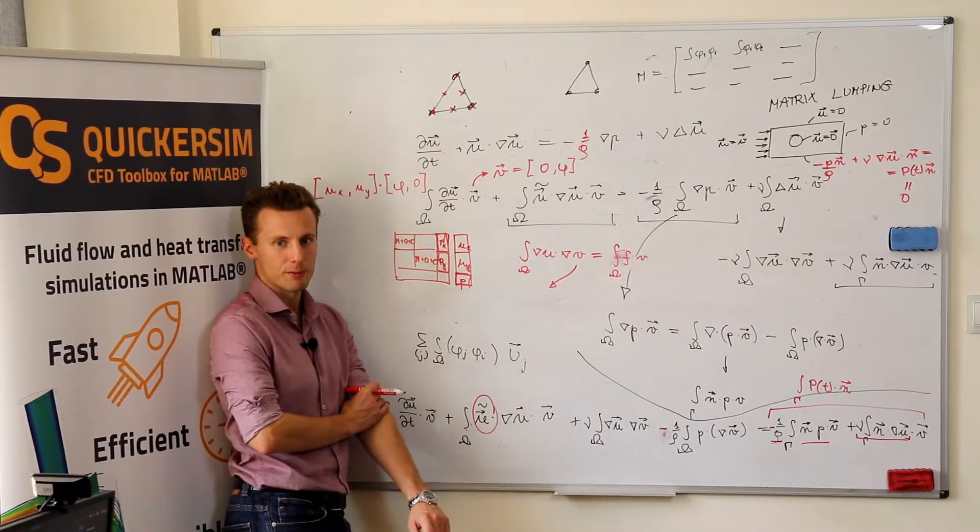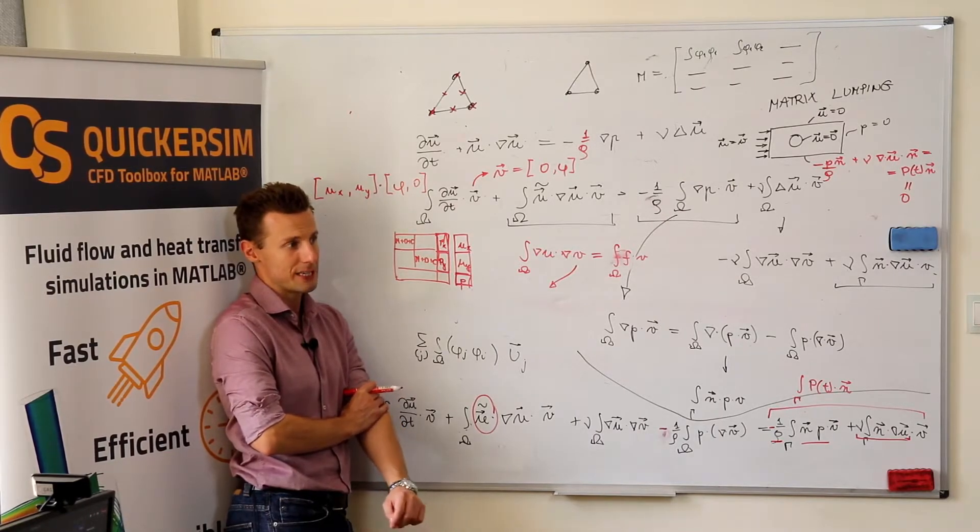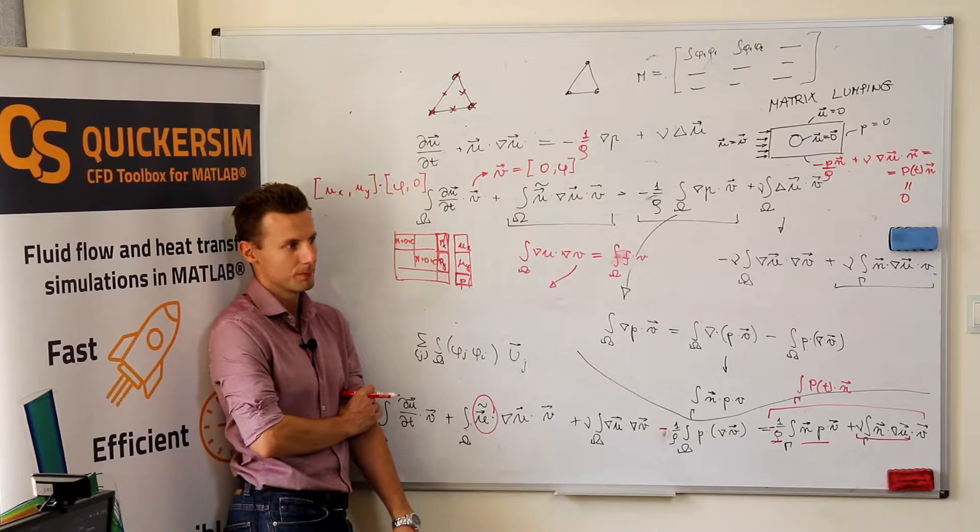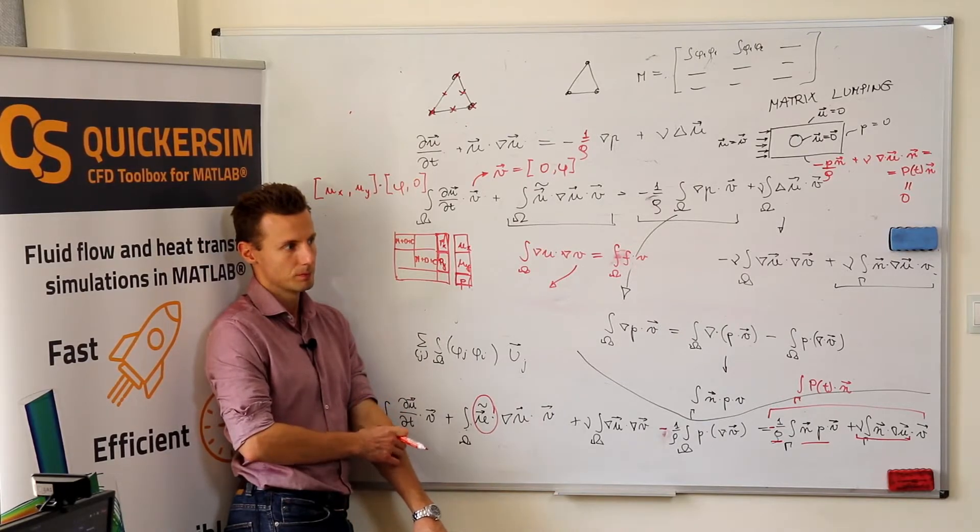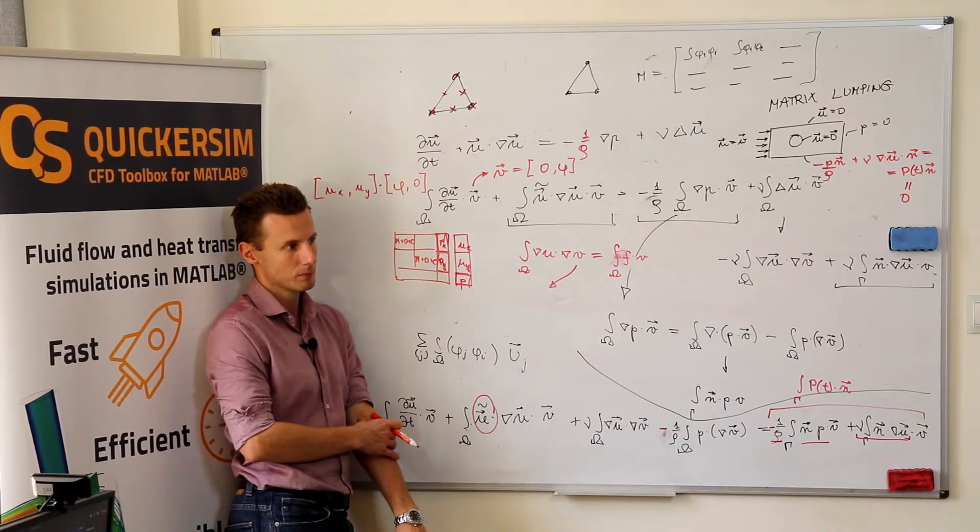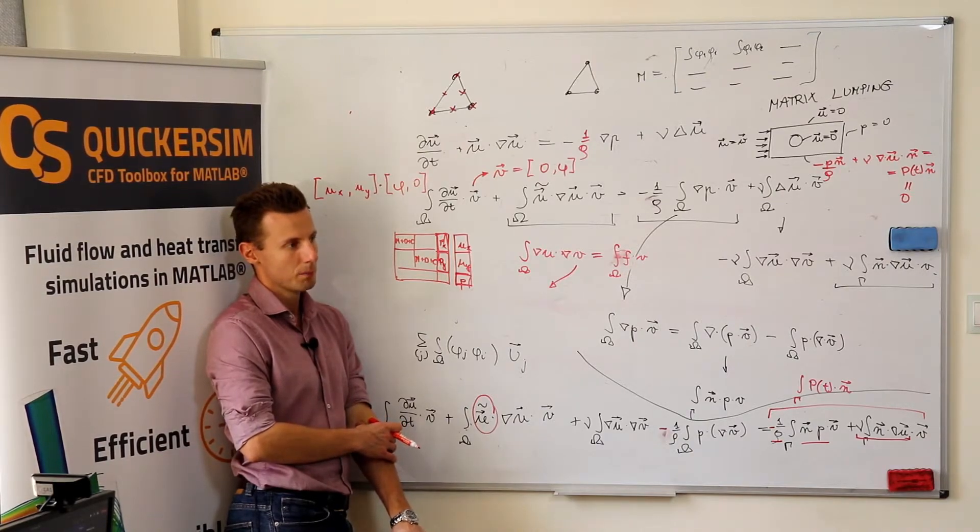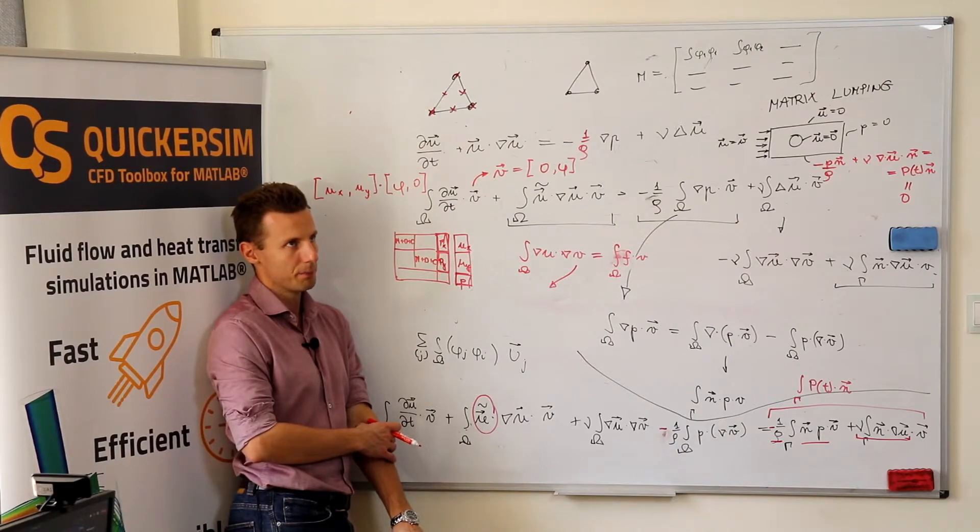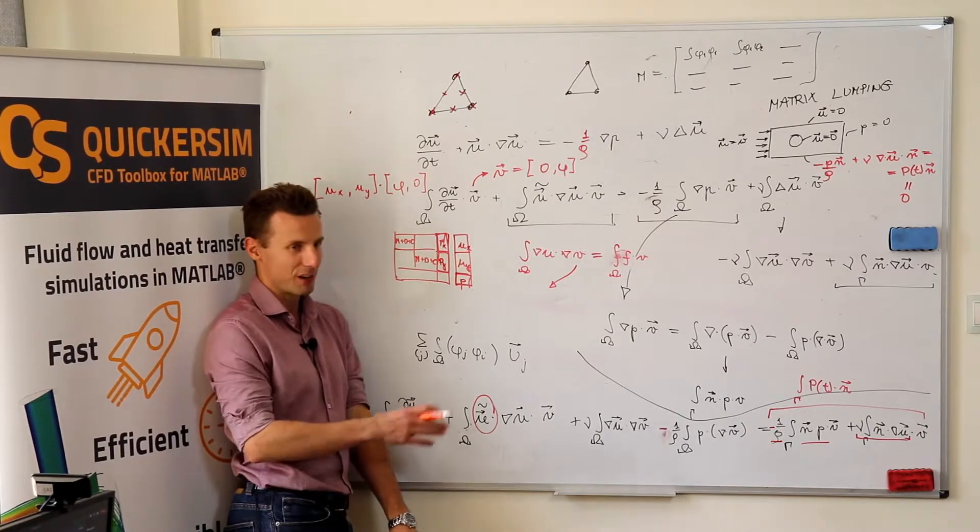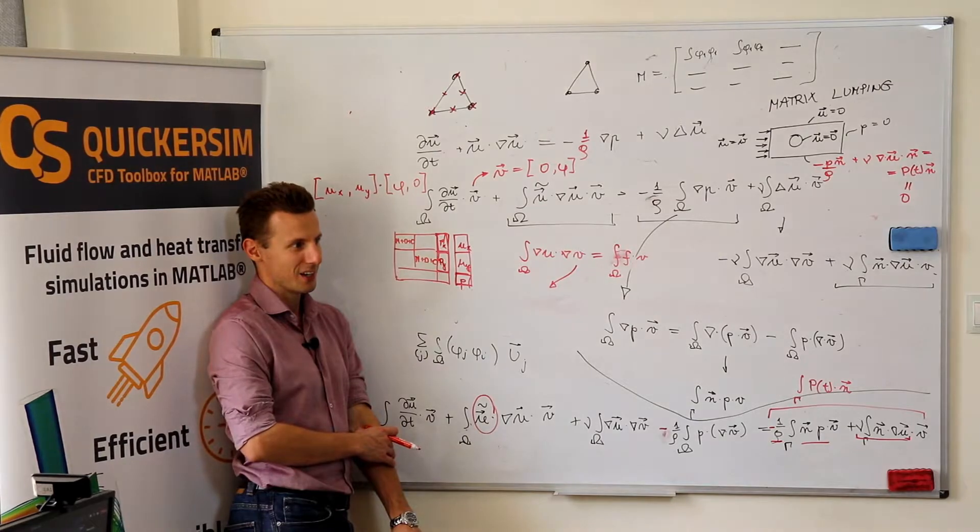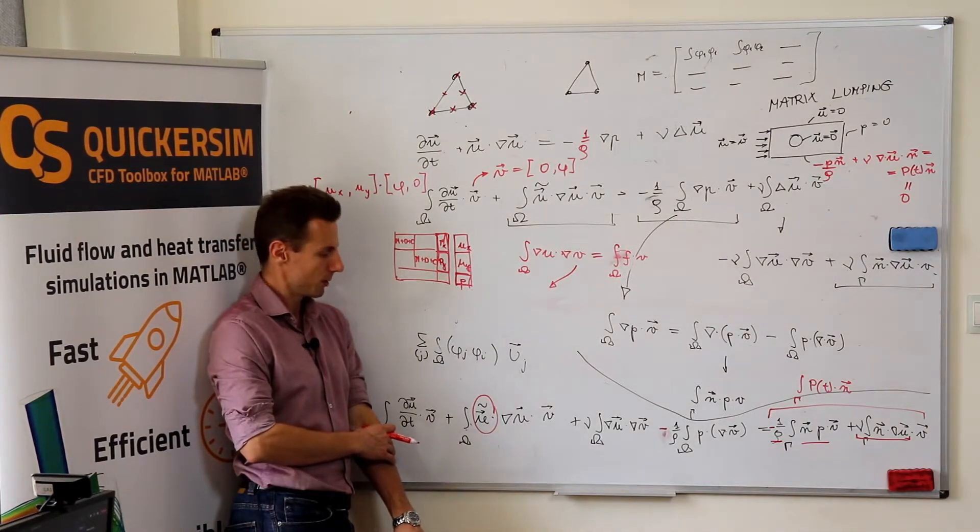What kind of other ideas you might have if it doesn't converge? We can start with a Laplace solution, like a potential flow. You can, but I'm pretty much sure the first iterations will be going fine with what Vojtek proposed.